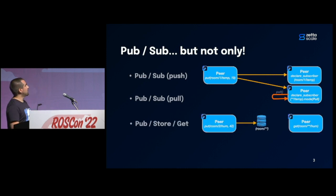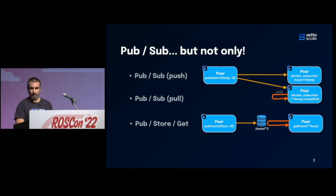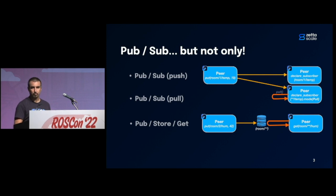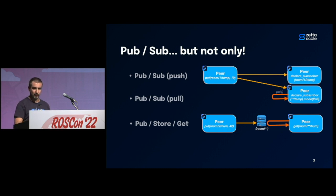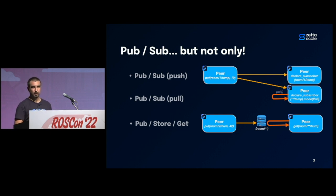It also supports a mode where you have intermediate storage. You can deploy somewhere in your network a storage, which will be configured to register all publications made on a certain topic or a certain set of topics. Later on, any other application using Xeno can do a query to retrieve back the past publications for any topics that have been registered by this storage.